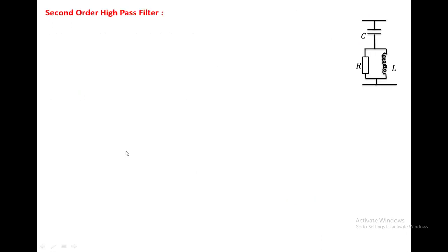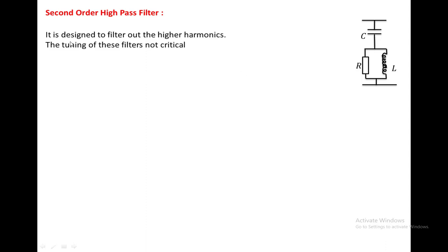The second order high pass filter circuit consists of a capacitor, an inductor, and a resistor — with the inductor and resistor in parallel, connected in series with the capacitor. It is designed to filter out higher harmonics, and the tuning of this filter is not critical — it is very easy to tune.